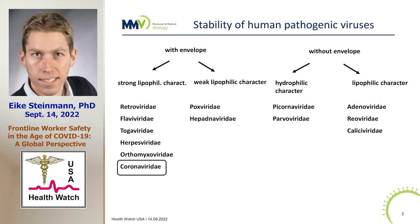Let me start with the general introduction. What do we know about stability of human pathogenic viruses in general? And what can we expect from coronaviruses and other viruses that might occur in the future? An important criterion on stability and inactivation is whether a virus has an envelope, like you see on the left side, or has no envelope. Viruses with an envelope, with this lipid character, are very easy to inactivate and are not very stable. Examples are HIV, hepatitis C virus, influenza virus, and coronavirus also belongs to that enveloped virus group with a strong lipophilic character.